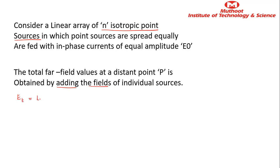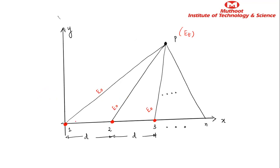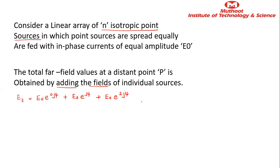The total E_total is E₀·e^(j·0·ψ) + E₀·e^(j·ψ) + ... and so on, where the magnitude is the same and the angle keeps increasing. Here we consider 0 for the first element because this first element doesn't have any other element to compare it to — it is the reference. This continues until + E₀·e^(j(N-1)ψ).